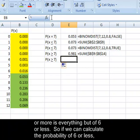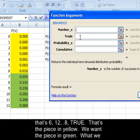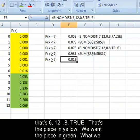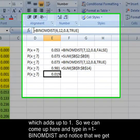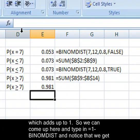So if we can calculate the probability of six or less—that's six, twelve, point eight, true—that's the piece in yellow, but we want the piece in green. What we know about this distribution is that it adds up to one. It's a valid probability distribution which adds up to one. So we can come here and type in equals one minus BINOMDIST. And notice that we get the same answer.